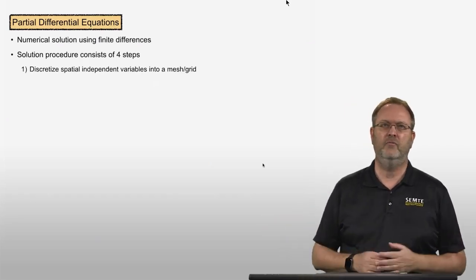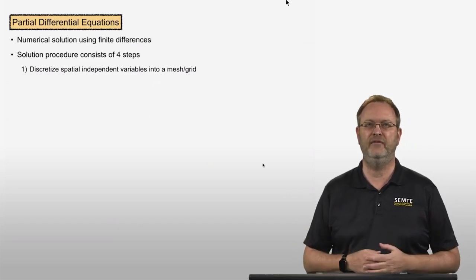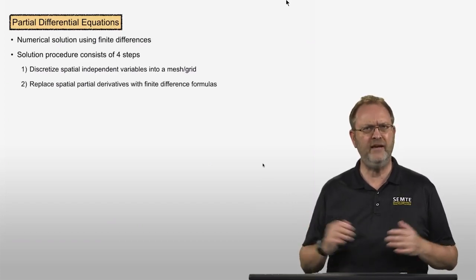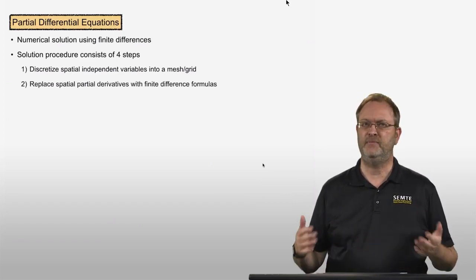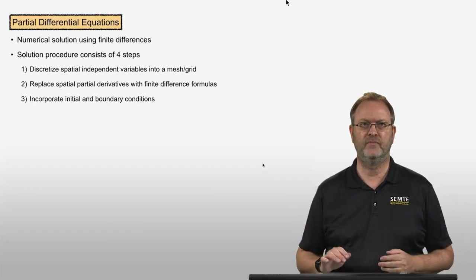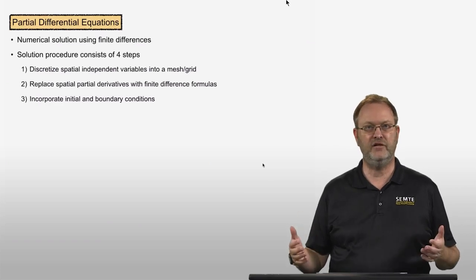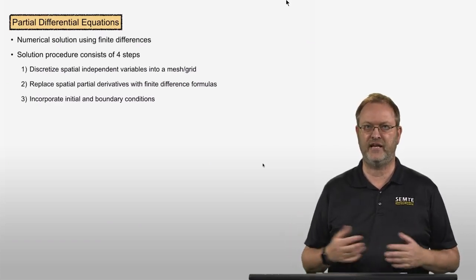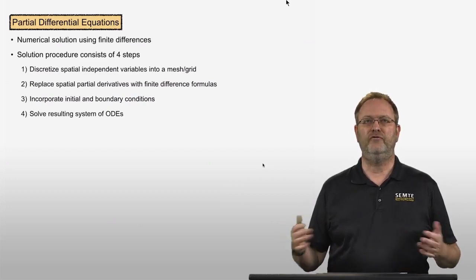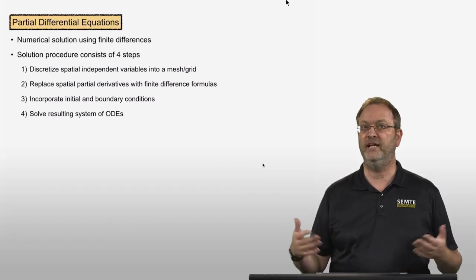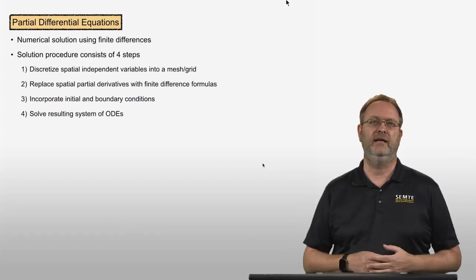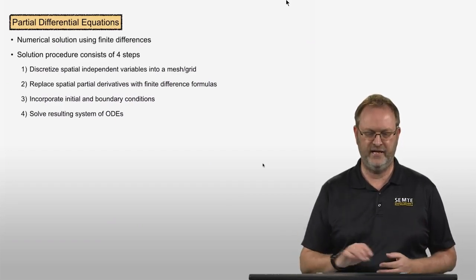First, we will discretize all spatial independent variables into a so-called mesh or grid. Then we will replace the spatial partial derivatives with finite difference formulas. Then we will incorporate the initial and boundary conditions given by the PDE problem. Finally, we will solve the resulting system of ODEs, because this process will turn our PDE into a system of ordinary differential equations.